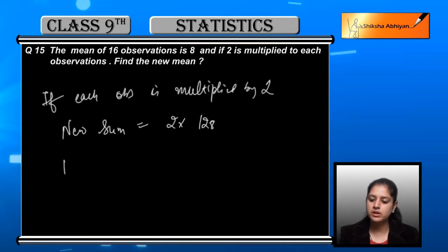What will be the new mean? New mean equals new sum divided by total observations. The new sum is 128 into 2.